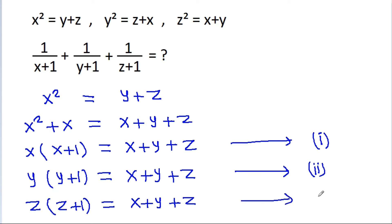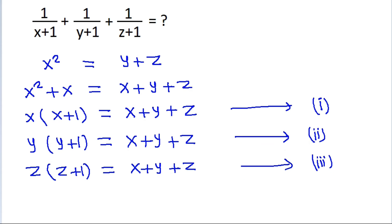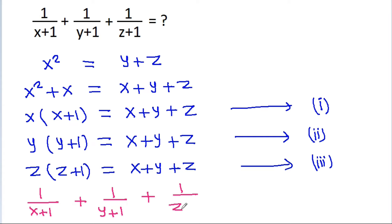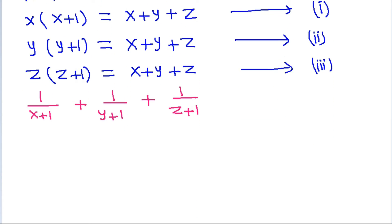We have to find the value of 1 by (x plus 1), plus 1 by (y plus 1), plus 1 by (z plus 1). From equation 1, we can get x plus 1 is equal to x plus y plus z divided by x.